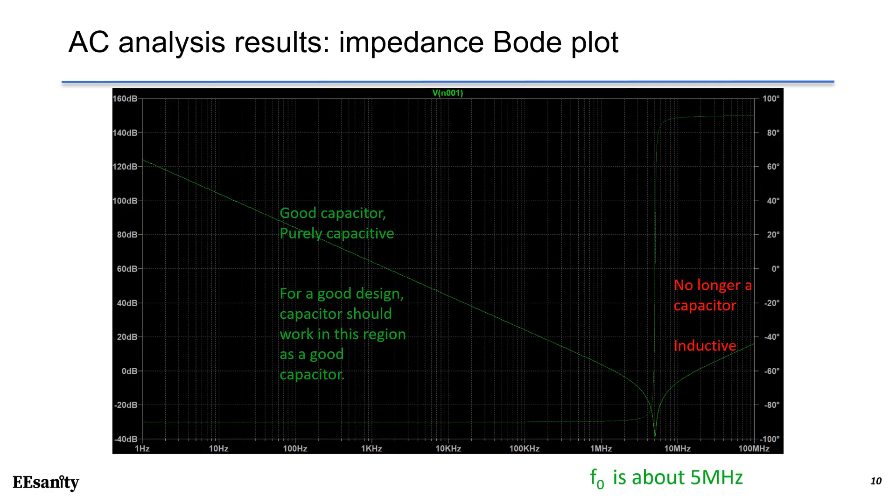If we run the AC analysis, we can see the Bode plot of total impedance. The solid line is the magnitude. The dashed line is the phase. The corner frequency is about 5 megahertz. When the frequency is below F0, you can see this is a purely capacitive region, shows a good capacitor behavior. For a good design, capacitor must work in this region as a good capacitor. If the frequency is above F0, it is no longer a capacitor. It is inductive region, and the capacitor now becomes an inductor. And we should never do that in our design.